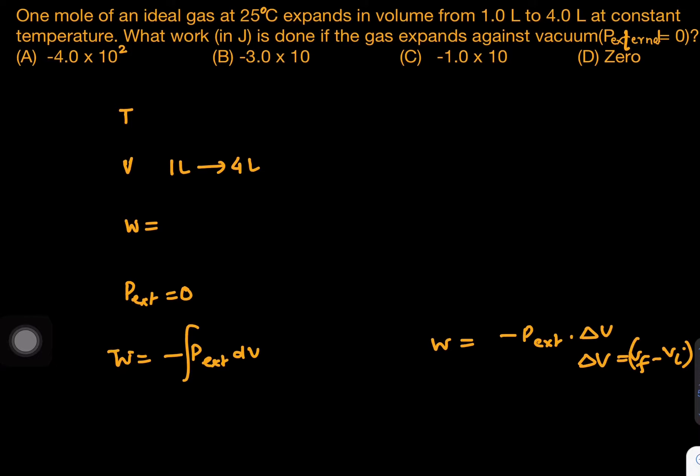So when you talk about the work done values for this situation, the first one, we can put P external 0 and get the answer 0. But the second question also, if we put P external 0, again the answer is coming 0.